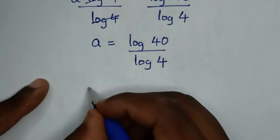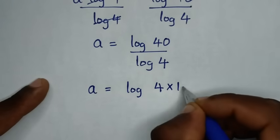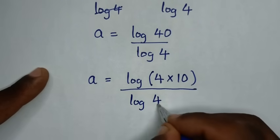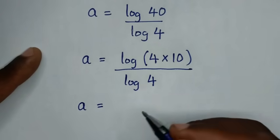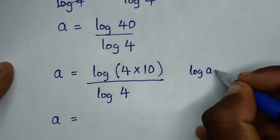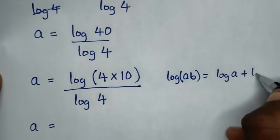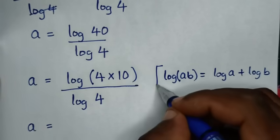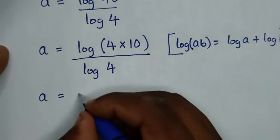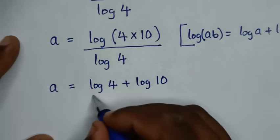Then in the next step, it will be a is equal to log of 40. 40 is the same as 4 times 10, then bracket over log of 4. So log of 4 times 10 is in the form of log of a times b, which expands as log of 4 plus log of 10, over log of 4.